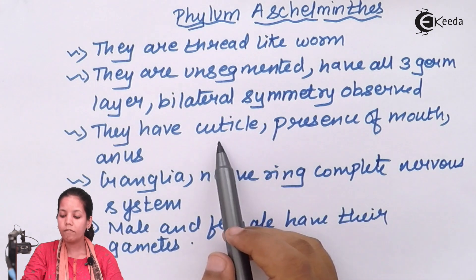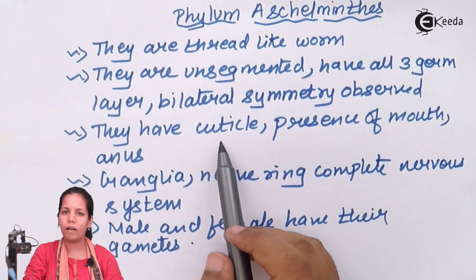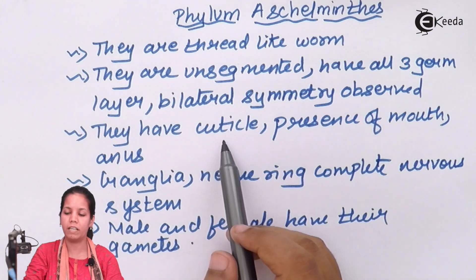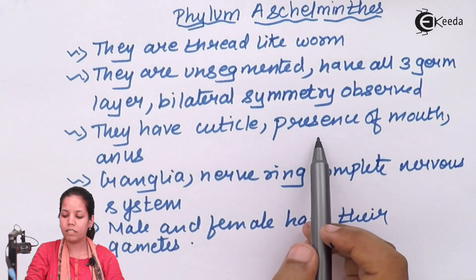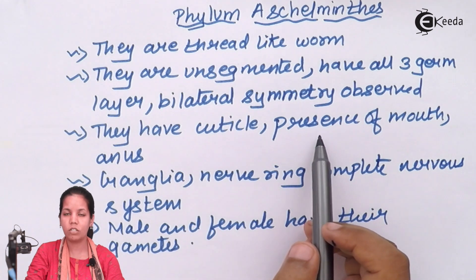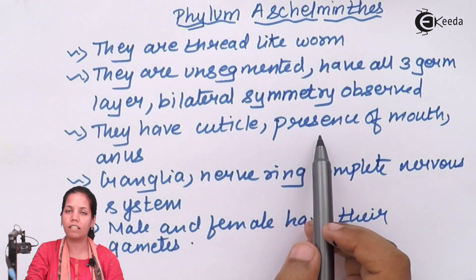They have cuticles — the rough structure that gives scars or aids in movement along the body. There is a presence of both mouth and anus; the anus is the excretive part of the system and the mouth is the digestive part.